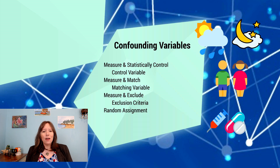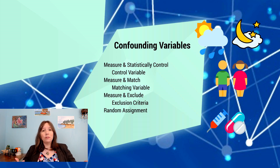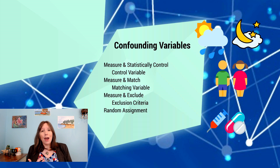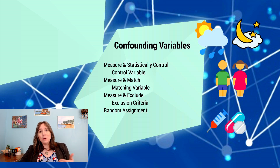Finally, there might be some confounding variables we need to exclude altogether. If a person is not just under the influence of cannabis but also under the influence of other psychoactive substances — such as methamphetamines, opiates, cocaine, alcohol, barbiturates, ADHD medication, anxiety medication, or sleep medication — those would also influence whether they experience a car collision. In that situation, we would use exclusion: if anybody is under the influence of anything in addition to cannabis, they simply cannot participate and would not be included in our data set.